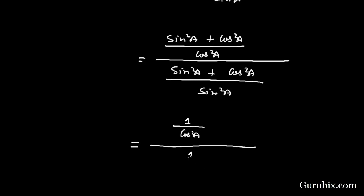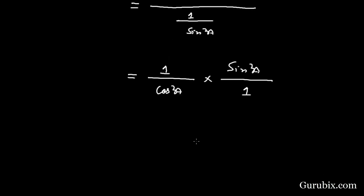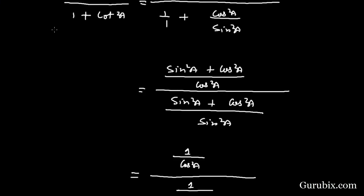This equals (1/cos²A) × (sin²A/1), which simplifies to sin²A / cos²A, and this value equals tan²A. Here we applied the identity that tan²A = sin²A / cos²A.